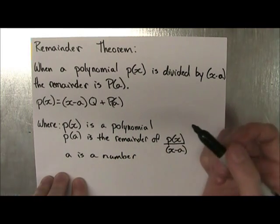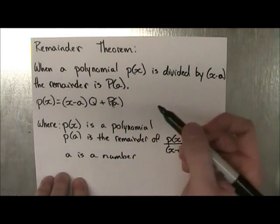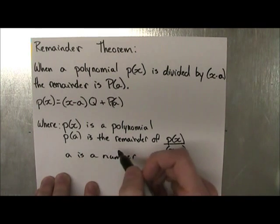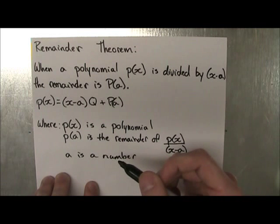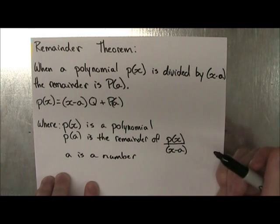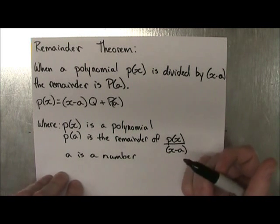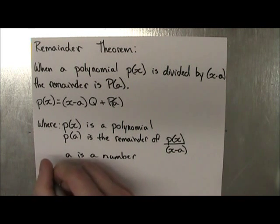What does this mean? And what do these things represent? Well, p(x) is our polynomial. p(a) is the remainder, just like in the other question we just did, the remainder would be 1. And a is a number. It can be any number. So let's start with an example.